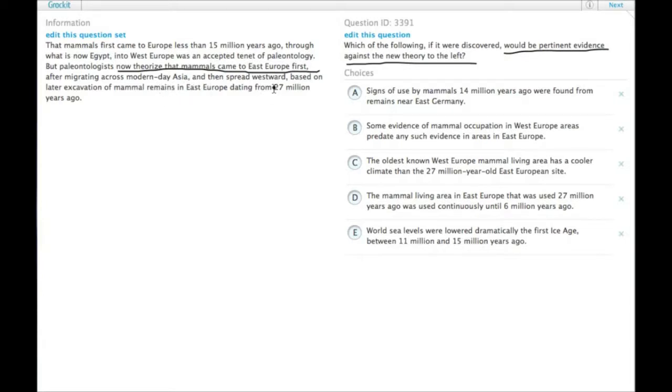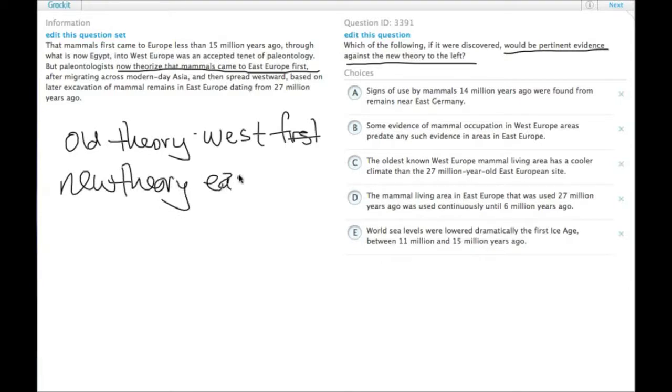We need pertinent evidence against the new theory to the left. So, the old theory was West Europe first. The new theory is that the East came first.